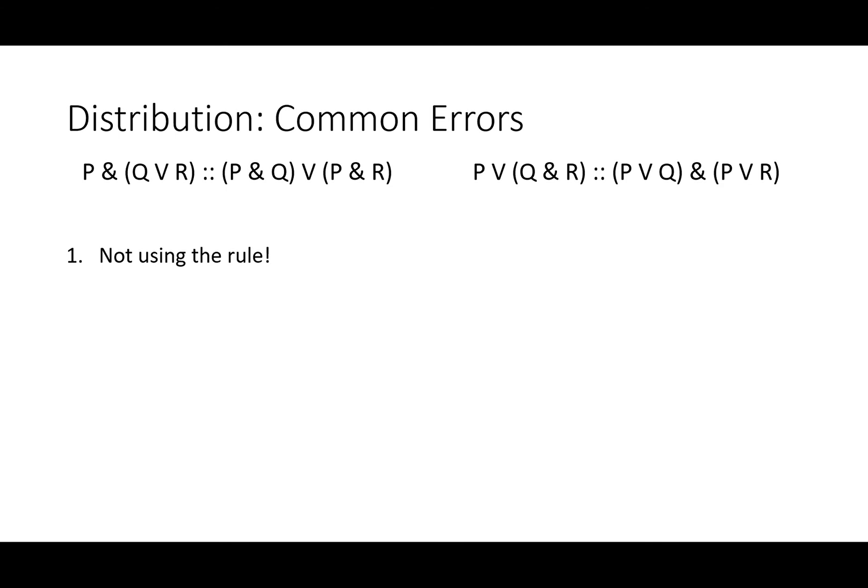There's only one common error with distribution. Because it's so difficult, when people actually use it, they don't usually use it very wrong. The main error is simply not using it. This is a powerful rule that can save you time and really does express a way that human beings actually do some of our thinking. If you have to look back at the cheat sheet every time you use this rule, that's fine — there's no shame in that. It's a hard one to memorize, but it's an important one to be able to use effectively.